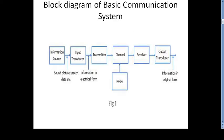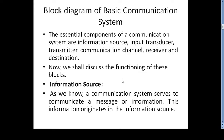The basic block diagram of a communication system consists of: information source, input transducer, transmitter, channel, receiver, output transducer, and noise. The essential components of the communication system are the information source, input transducer, transmitter, communication channel, receiver, and destination. We shall now discuss the function of each block separately.